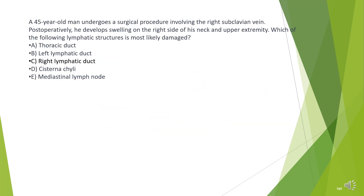A 45-year-old man undergoes a surgical procedure involving the right subclavian vein. Postoperatively, he develops swelling on the right side of his neck and upper extremity. Which of the following lymphatic structures is most likely damaged?